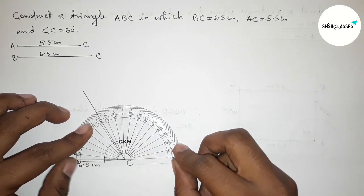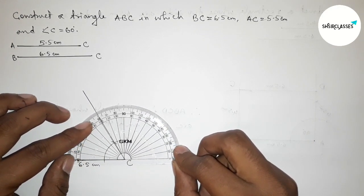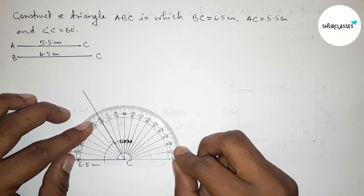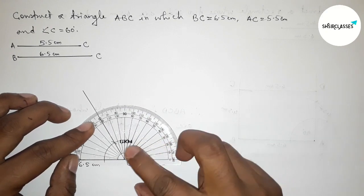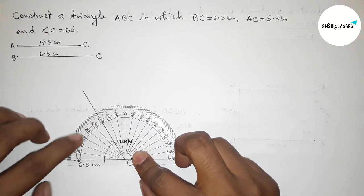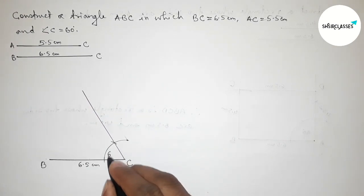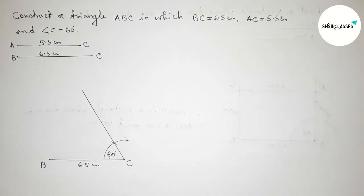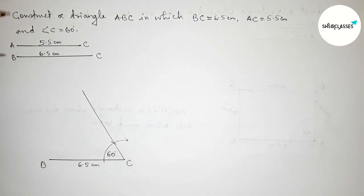Checking with the help of a protractor whether it is 60 degrees or not. This is perfectly a 60 degree angle, so angle C equals 60 degrees.